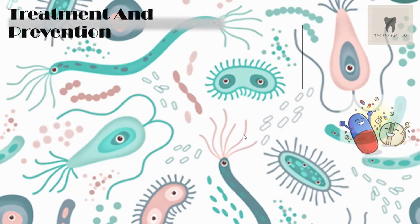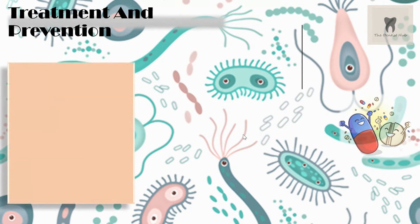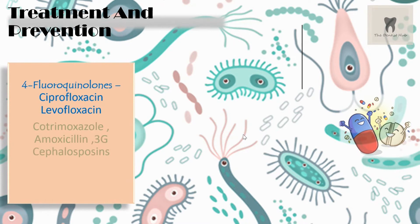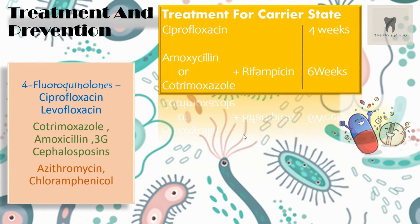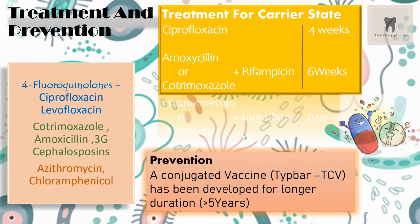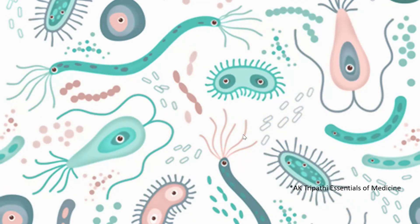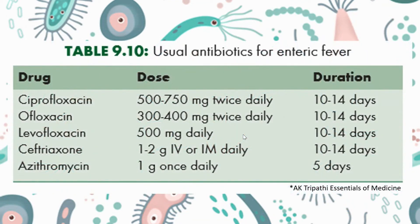Typhoid is treated with fluoroquinolones like ciprofloxacin and levofloxacin, cotrimoxazole, amoxicillin, third-generation cephalosporins, azithromycin, and chloramphenicol. In the case of a carrier, ciprofloxacin for four weeks or amoxicillin/cotrimoxazole with rifampicin for six weeks is prescribed. The preventive vaccine for typhoid fever is a conjugated vaccine called Typbar TCV. These are the usual antibiotics used for typhoid.